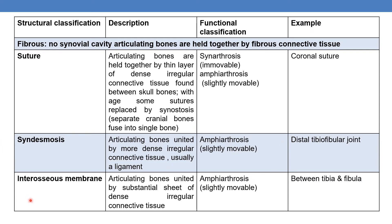The next type of fibrous joint is the interosseous membrane. Here, the articulating bones are united by a substantial sheet of dense irregular connective tissue. Its functional classification is amphiarthrosis — slightly movable. An example is the joint between the tibia and fibula.